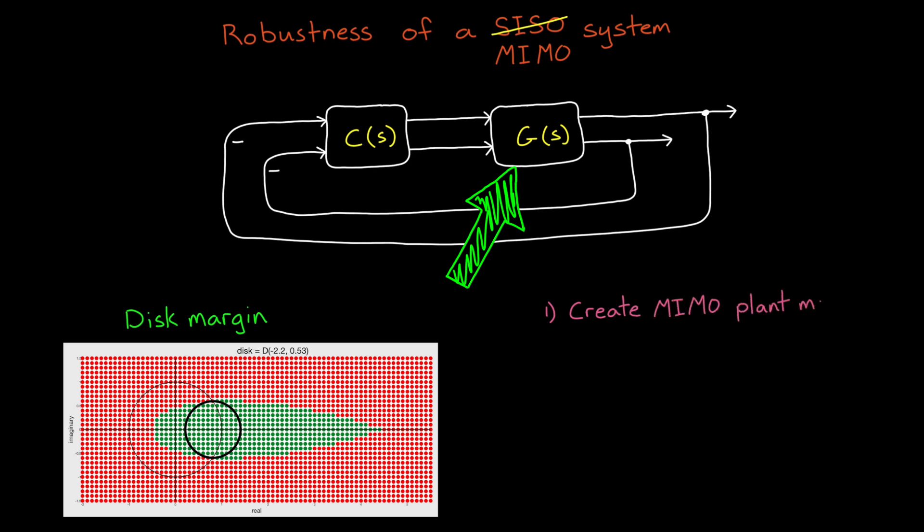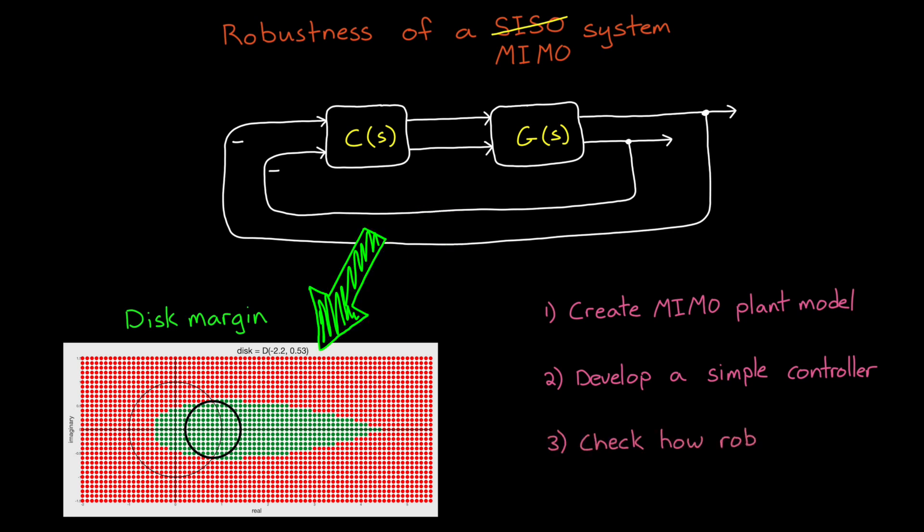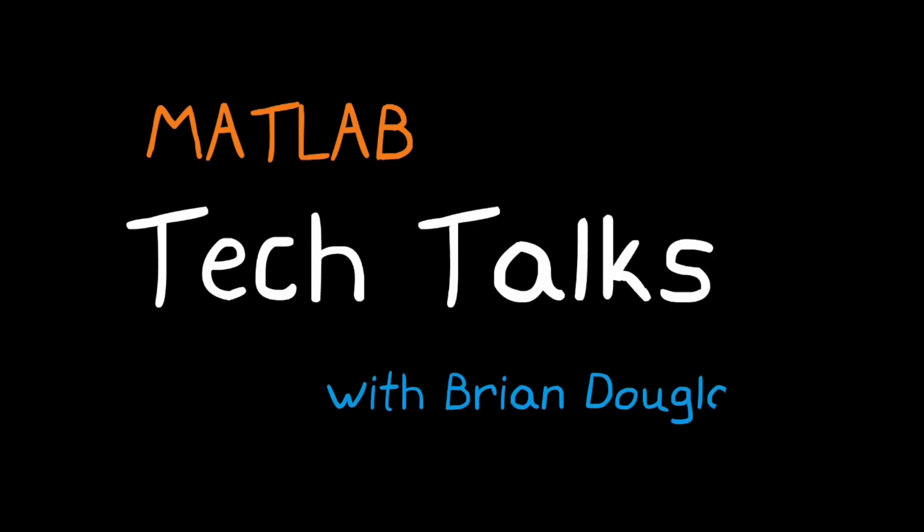In the first part, we'll set up a two-input, two-output plant and describe it in some detail so that you have a little intuition behind it. In part two, we'll develop a very simple controller that can successfully track two independent setpoints. And in part three, we're going to check how robust our controlled system is to variations. Now, what I hope to show you is once again how disk margin is a nice way to represent the robustness of a multi-input, multi-output system. So let's get to it. I'm Brian, and welcome to a MATLAB Tech Talk.